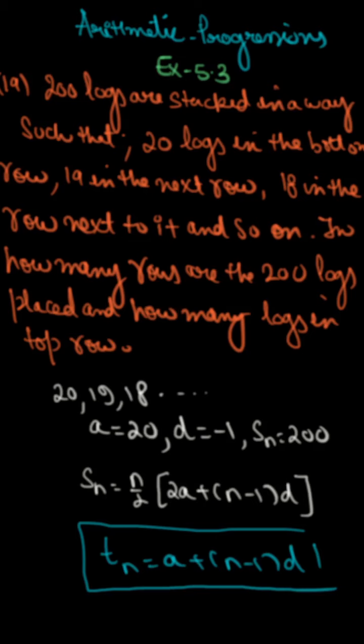The AP will be 20, 19, 18... So A equals 20, D equals minus 1, and total logs Sn equals 200.